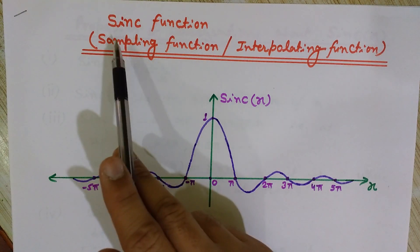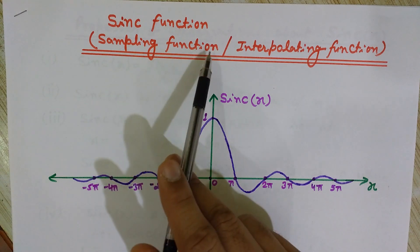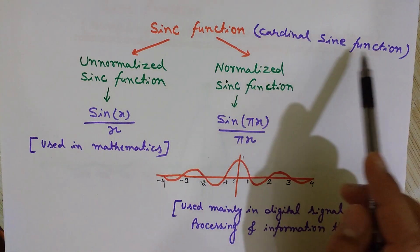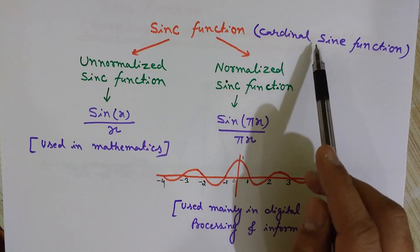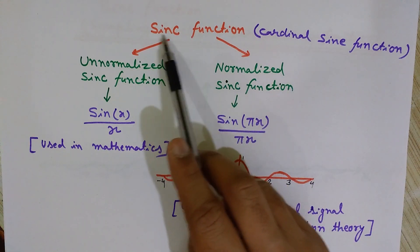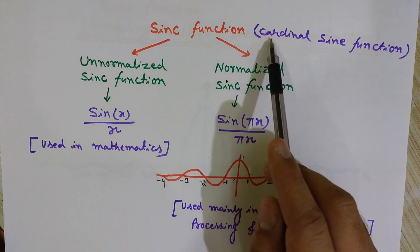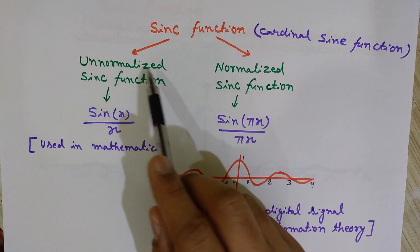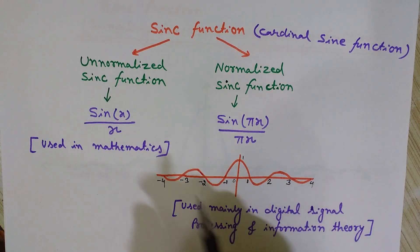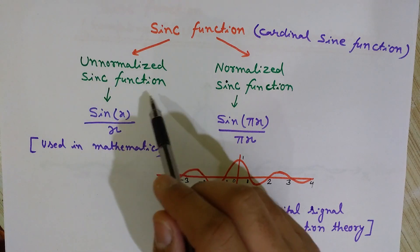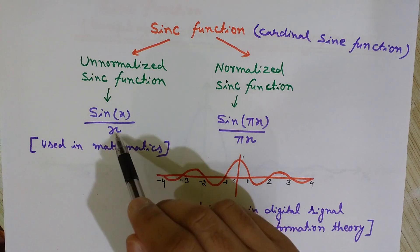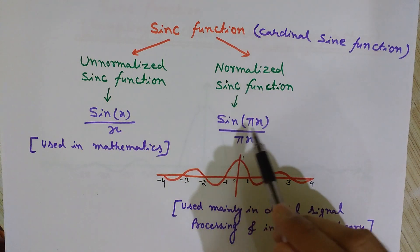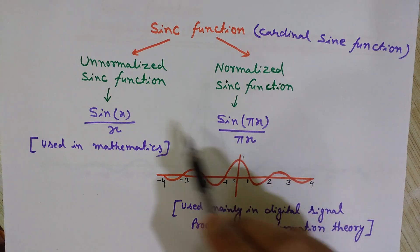The sinc function is also known as the sampling function or the interpolating function. The full form of sinc is cardinal sine — 'sinc' where 'sin' stands for sine and 'c' stands for cardinal. It is of two types: normalized and unnormalized. The unnormalized sinc function is denoted as sin(x)/x, while the normalized sinc function is denoted as sin(πx)/(πx). The difference is that we replace x by πx.